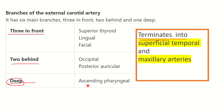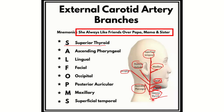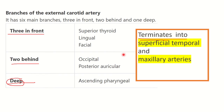The terminal branches are the superficial temporal and maxillary arteries. Here we can see the external carotid artery ascending and bifurcating into two terminal branches: the maxillary artery, which supplies the maxillary region, and the superficial temporal artery, which supplies the temporal region.